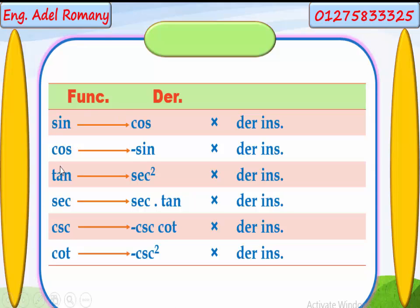Trigonometric function derivatives: if y equals sin x, y dash equals cos x. If y equals cos x, y dash equals negative sin x. If y equals tan x, y dash equals sec squared x. If y equals sec x, y dash equals sec x tan x. If y equals cosec x, y dash equals negative cosec x cot x. If y equals cot x, y dash equals negative cosec squared x. All derivatives must be multiplied by the derivative of the inside.